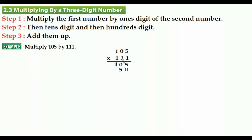Then 1 times 0 — you are going to continue writing from the tens digit of the second number. Then 1 times 1 is equal to 1 — you are going to write it there. Now we are going to continue to the third step — multiplying the first number by the hundreds digit of the second number.